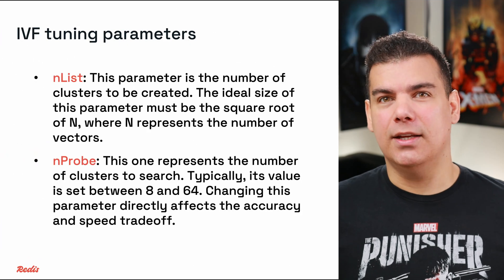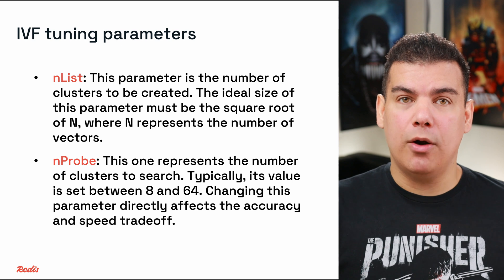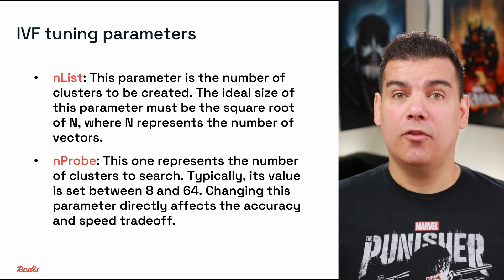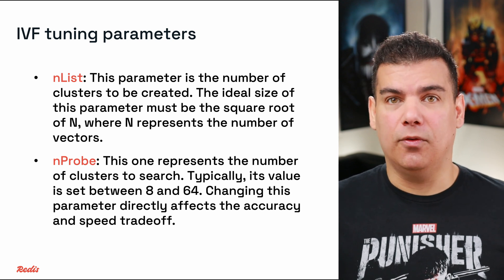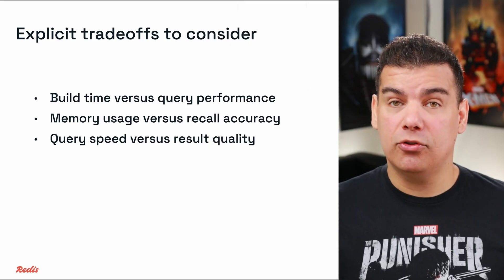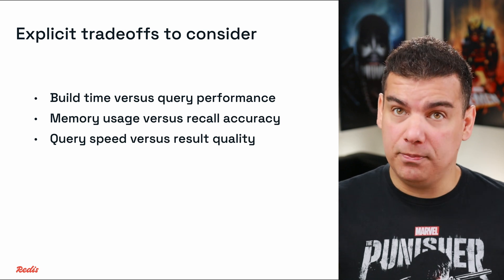For IVF indexes, the parameters to pay attention to are: N-List, representing the number of clusters (optimally the square root of N, where N is your vector count); and N-Probe, representing the number of clusters to search (typically ranging from 8 to 64), which directly controls the accuracy and speed trade-off. These parameters create explicit trade-offs between build time versus search time performance, memory usage versus recall accuracy, and search speed versus result quality. The key insight: parameters should be tuned systematically based on your specific data distribution, hardware constraints, and accuracy requirements.